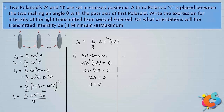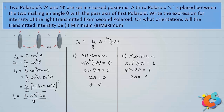For the maximum case: I3 will be maximum when sin²2θ takes its maximum value of 1. So sin2θ = 1, which means 2θ = 90°, therefore θ = 45°. When θ = 45°, the angle between A and C is 45°, and the emergent intensity I3 is maximum. This means the third polaroid C should bisect the angle between A and B.